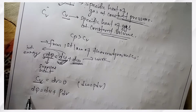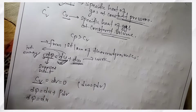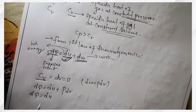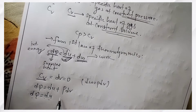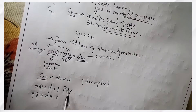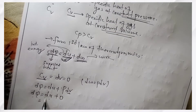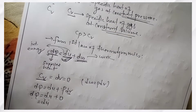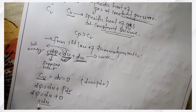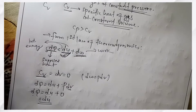So, what happens in Cv? dQ equals dU. Because dW equals P times dV, and dV equals zero, so dW equals zero. Therefore, dQ equals dU. At constant volume, all supplied heat goes into internal energy.